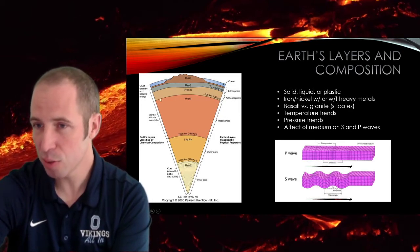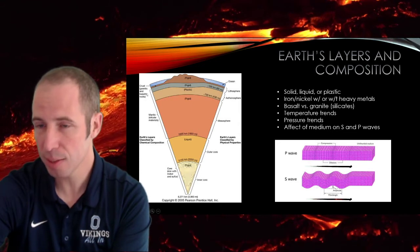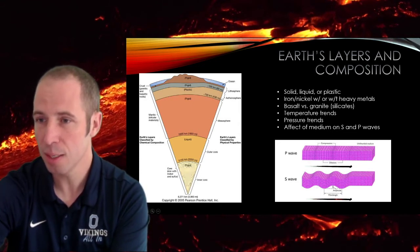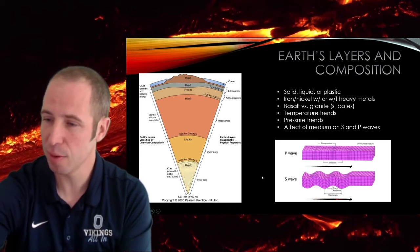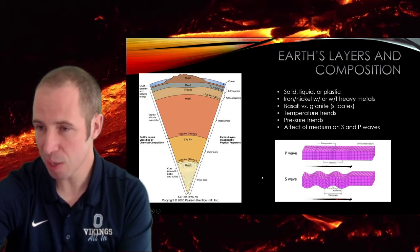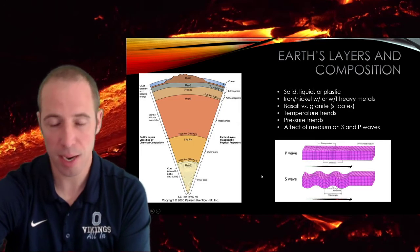Also, there are some cool features right on the junctions between some of these layers. Like one of them is called the moho discontinuity. There's some cool like sudden transitions you can tell using earthquake waves to figure that out. So seismic waves help us know about the earth's interior. All right, moving on.